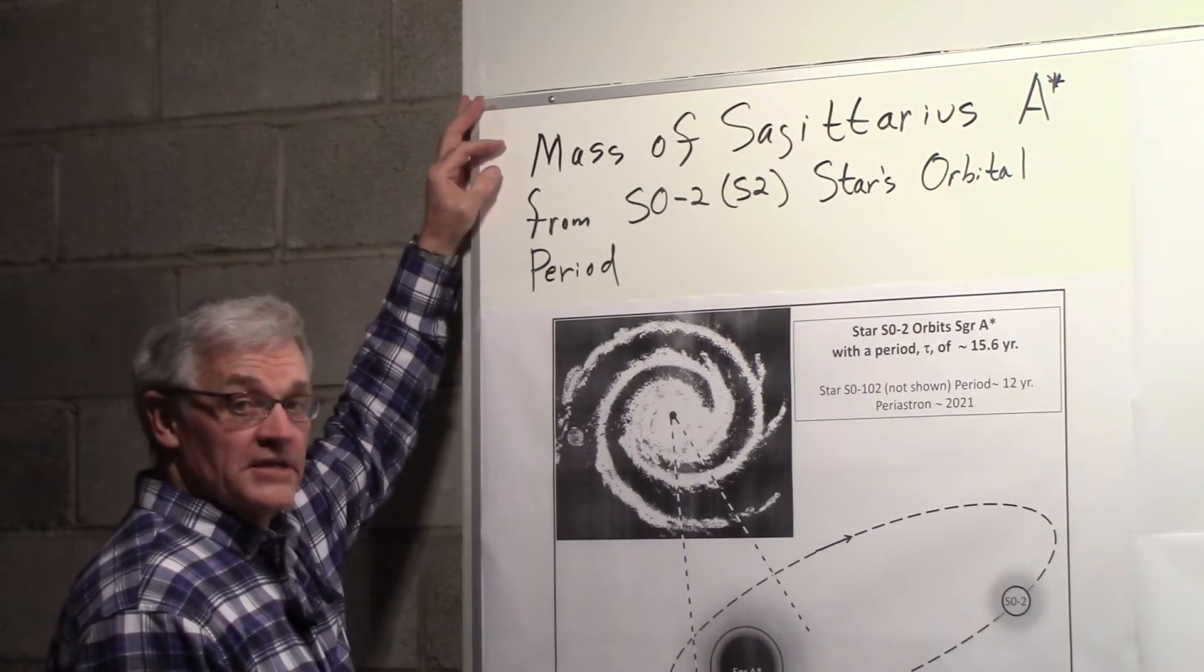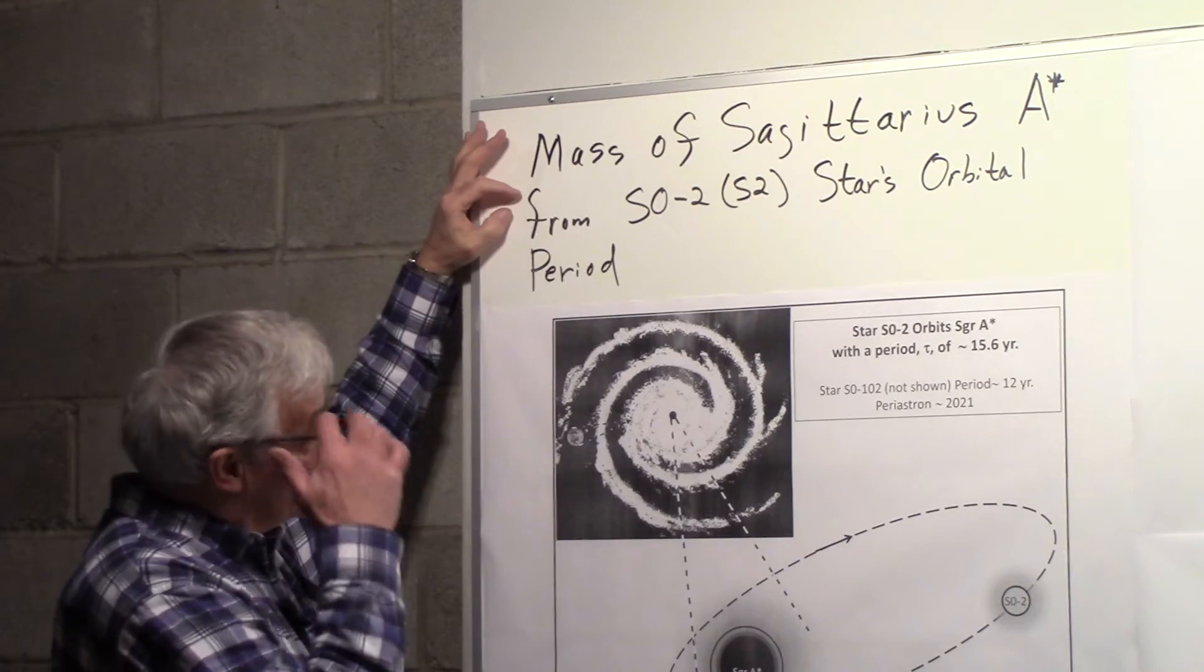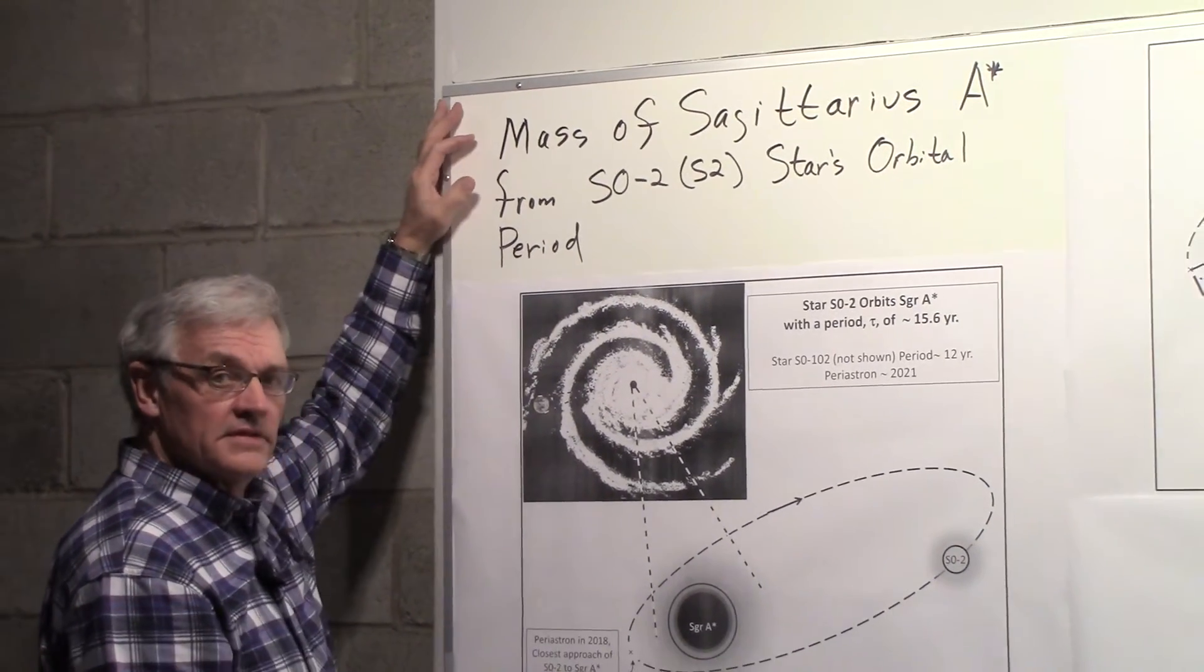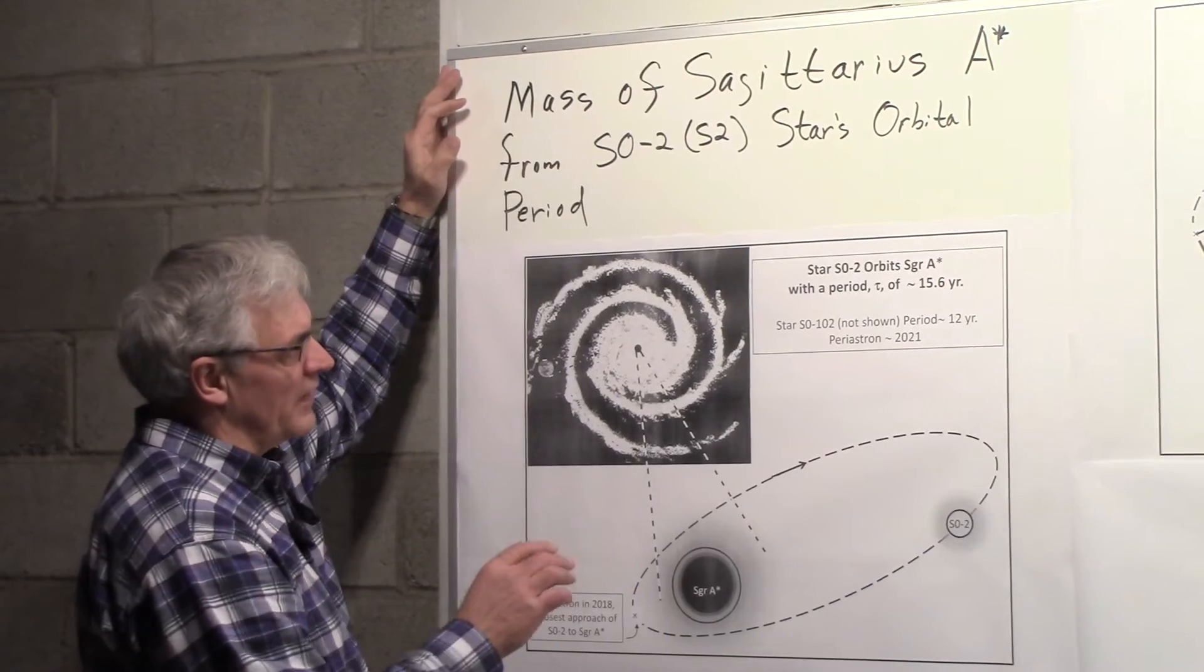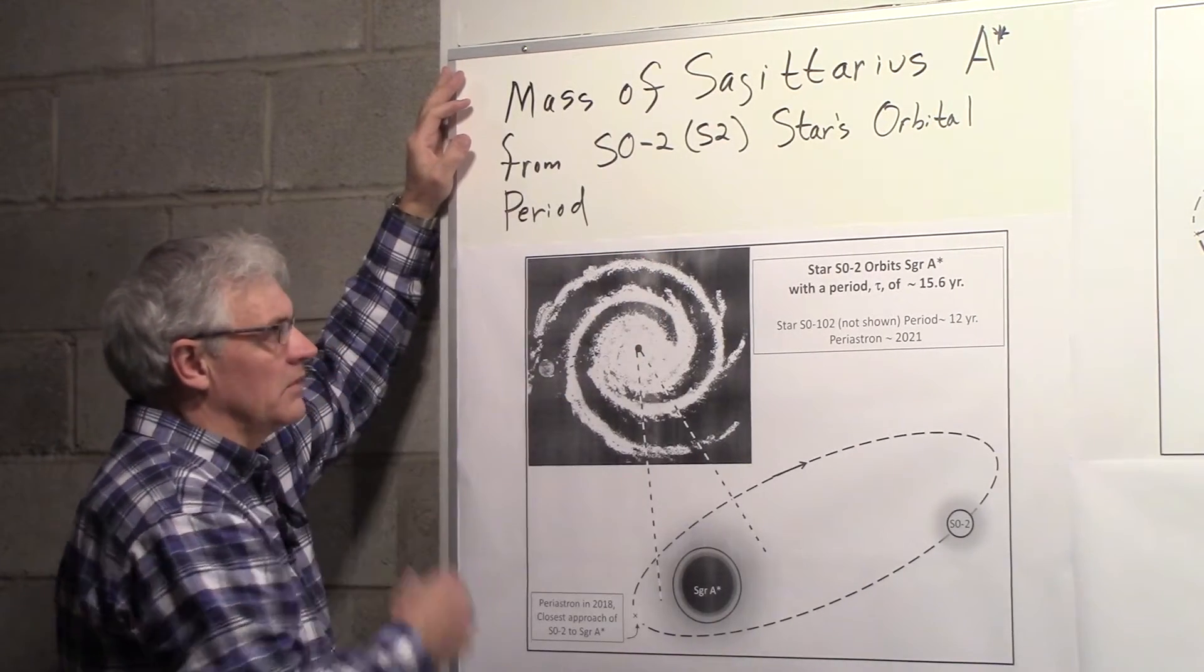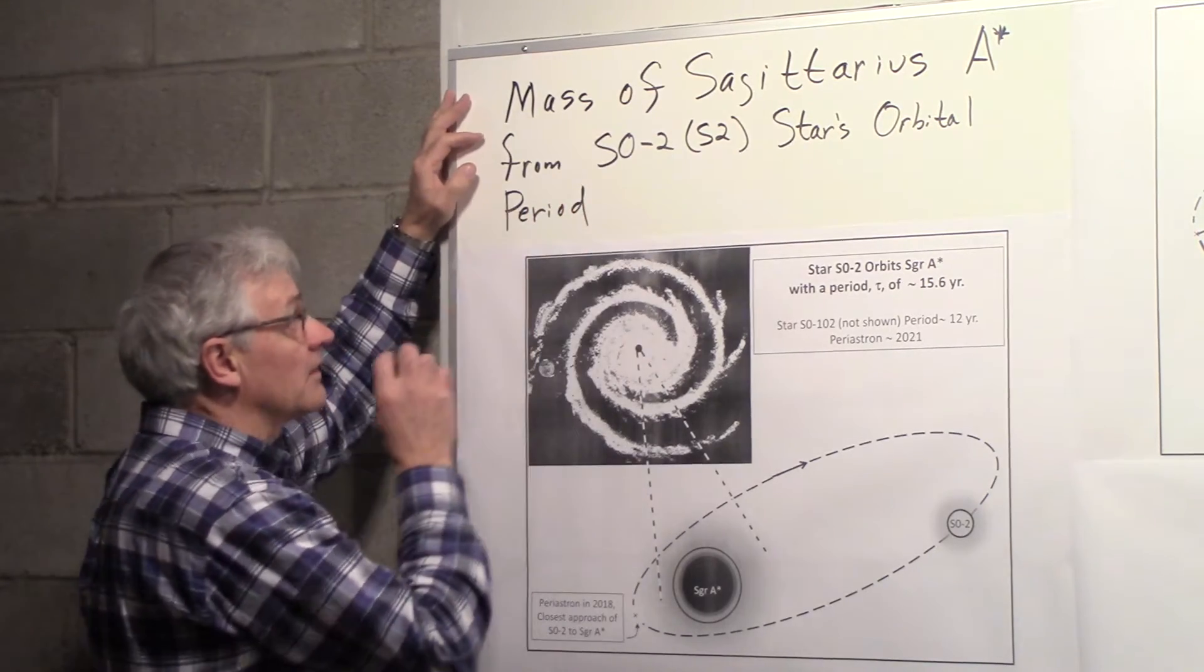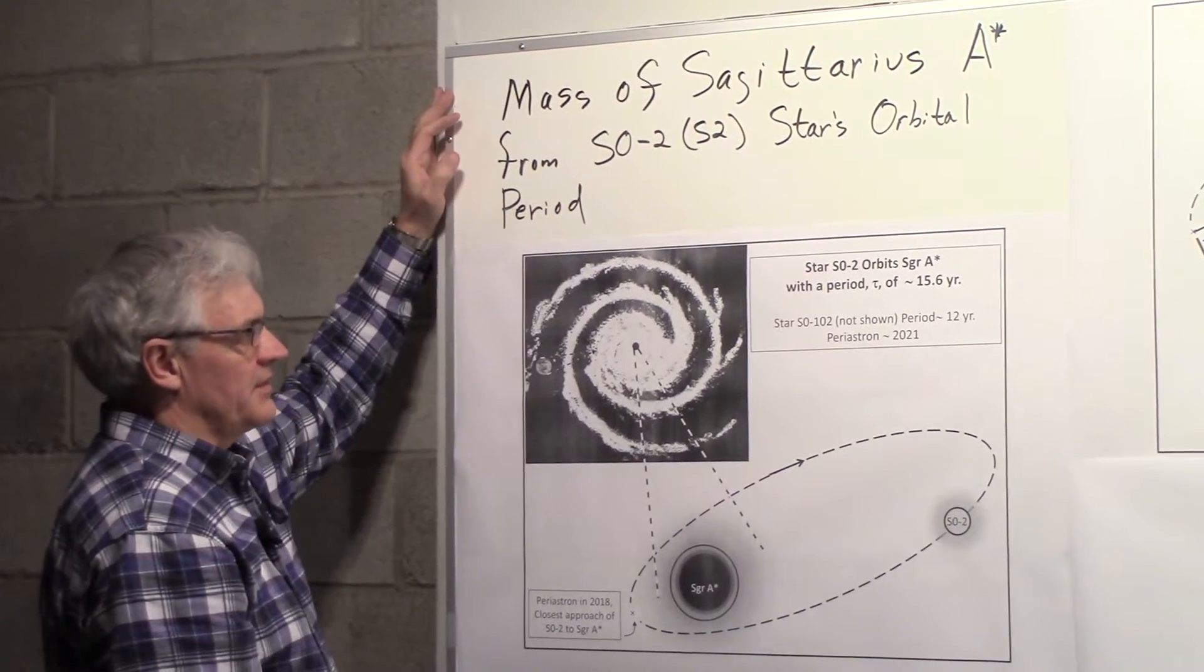We want to find the mass of Sagittarius A*, and we'll look at a star known as S02 or S2. We'll look at its orbital period to get the mass of Sagittarius A*.